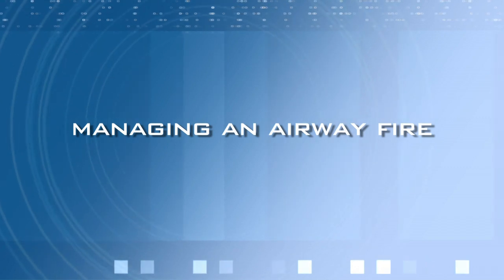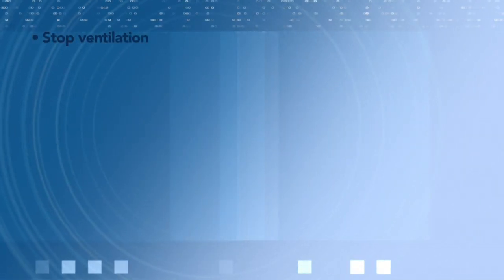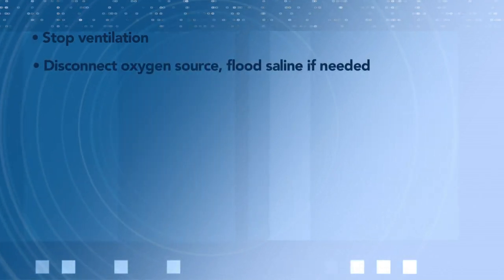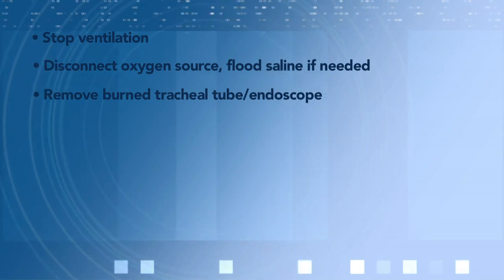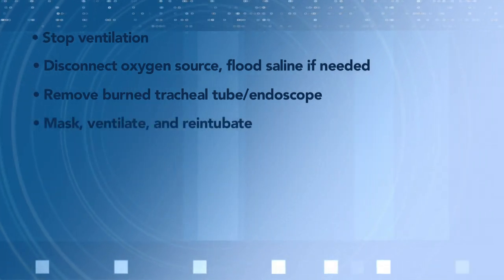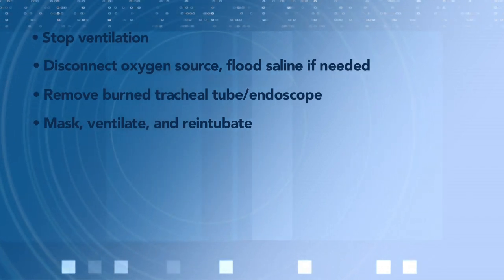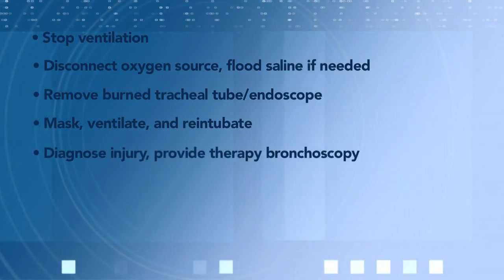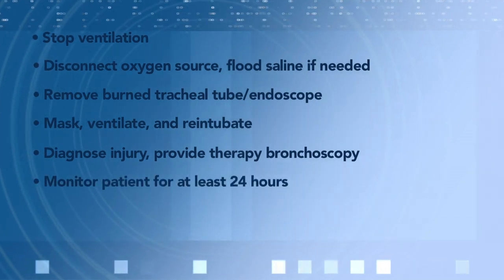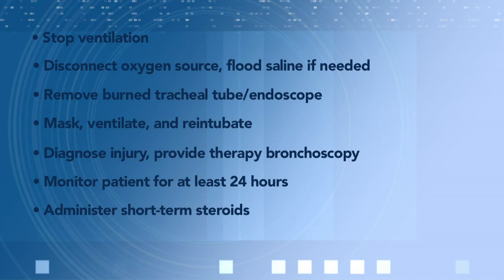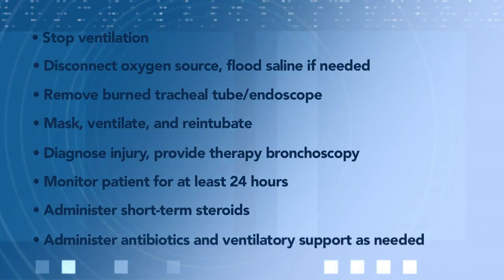According to ANSI standards, the following steps are to be taken to manage a case of an airway fire: stop ventilation, disconnect the oxygen source, flood the area with saline if needed, remove the burned tracheal tube or endoscope from the airway, mask, ventilate, and re-intubate as soon as possible. Make sure the airway is patent. Diagnosing the injury and providing therapy by bronchoscopy sometimes ensues. Monitor the patient for at least 24 hours. Short-term steroids can sometimes reduce the edema. Provide antibiotics and ventilatory support as needed depending on the level of injury.